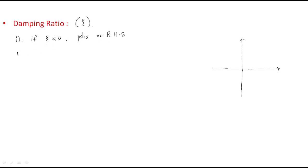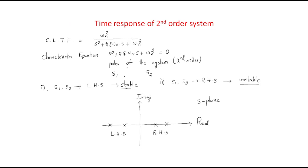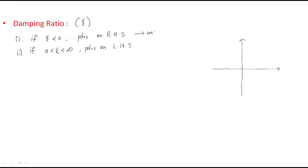If zeta is greater than zero — that is, between zero and infinity — then the poles lie on the left half of the s-plane. Whenever the poles are on the right half of the s-plane, the system is automatically unstable. That is why zeta also decides the system stability — whether the system is stable or unstable is decided by zeta, making it a very important factor.